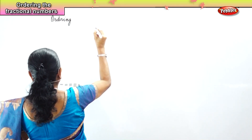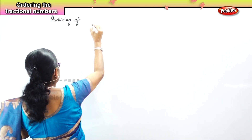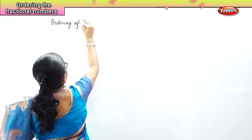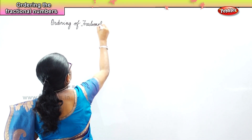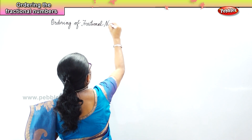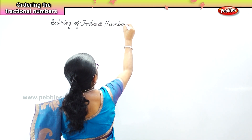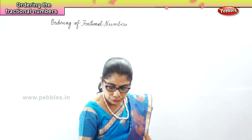One by two, one by five — these are all fractional numbers. Now ordering means putting them in order. In a fractional number, which is big, which is small, which comes first — that's what we are going to look at carefully today.